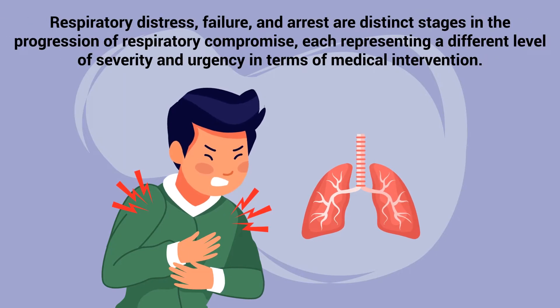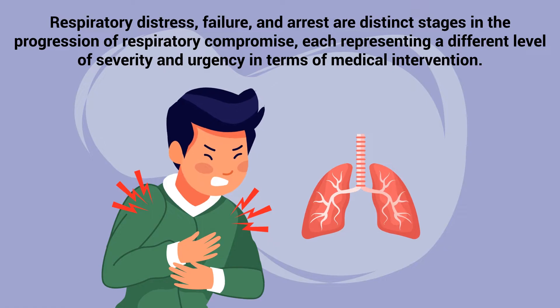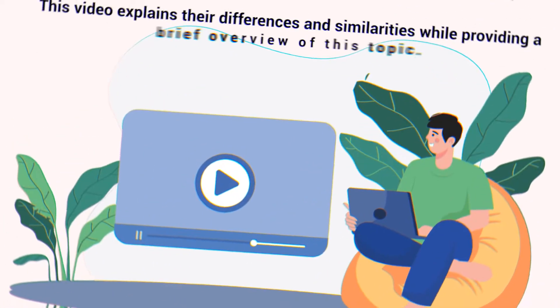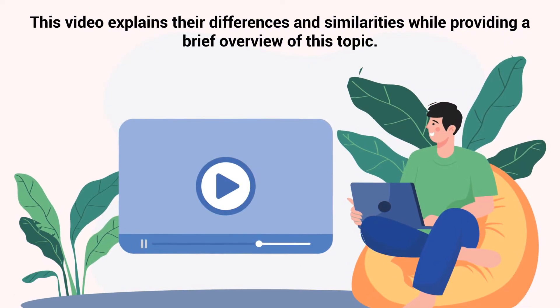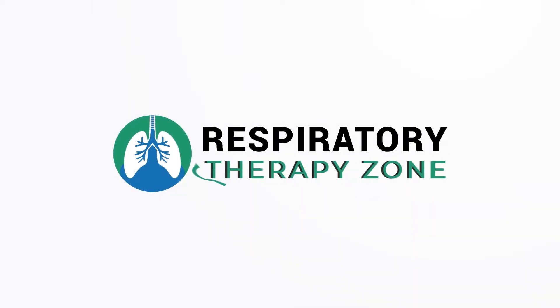Respiratory distress, failure, and arrest are distinct stages in the progression of respiratory compromise, each representing a different level of severity and urgency in terms of medical intervention. This video explains their differences and similarities while providing a brief overview of this topic. So, if you're ready, let's get into it.